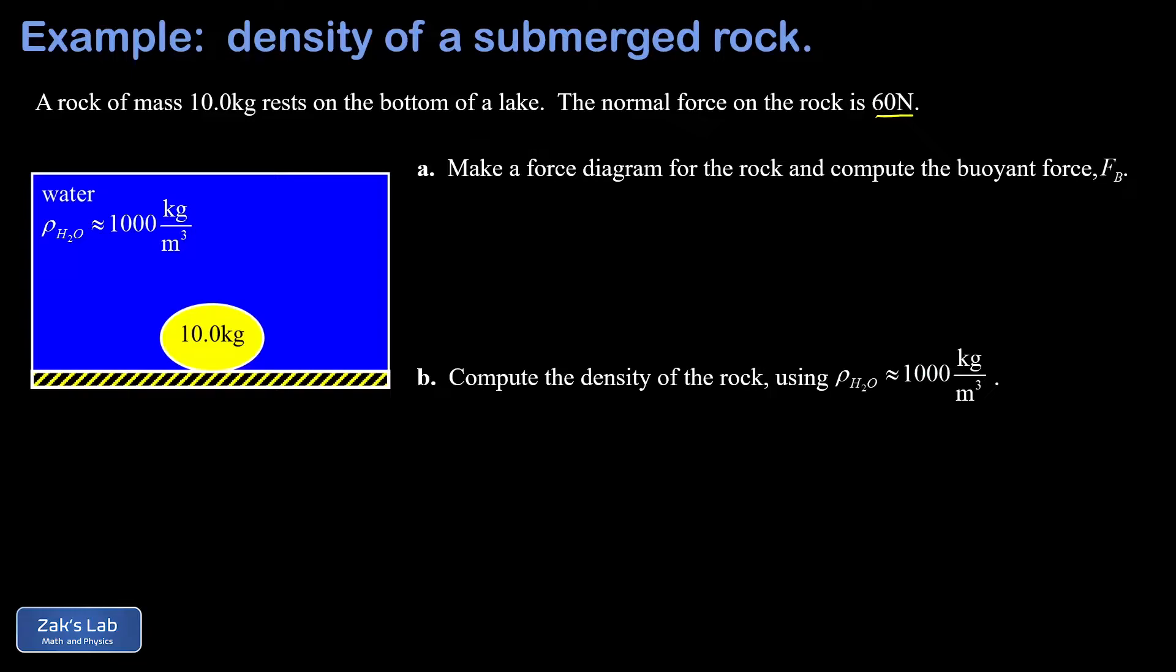We'll go ahead and start things out with the force diagram and we have two forces pointing up: that's the normal force and the buoyant force. One force pointing down: that's the force of gravity. This rock is in equilibrium so all those forces have to balance.